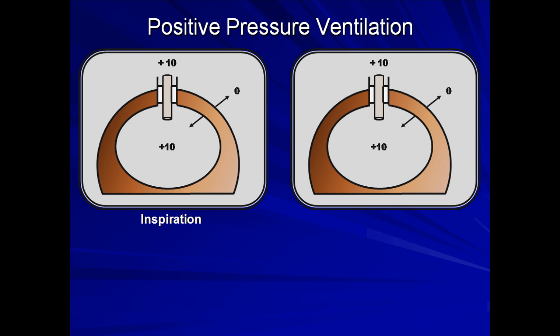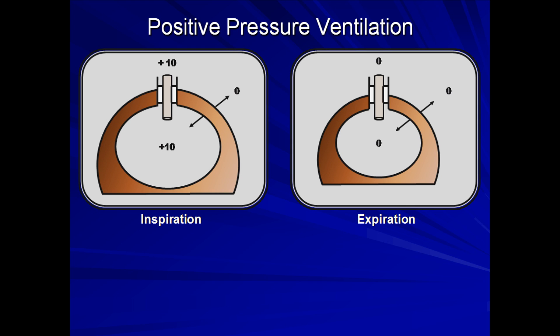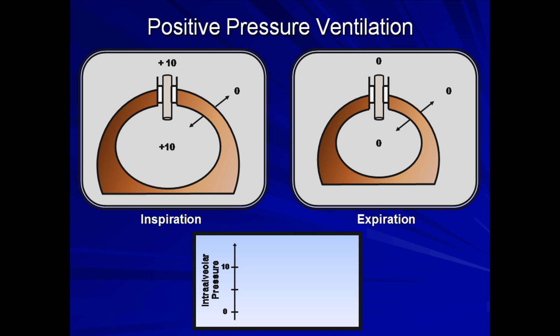Expiration is triggered by removal of the positive pressure being applied to the tube. Now the pressure gradient drives gas out of the lungs. As equilibrium is reached and the intra-alveolar pressure reaches zero, the net force on the lung favors elastic recoil, leading to lung deflation. Let's take a look at a graph of intra-alveolar pressure as a function of time. The dashed gray line will be atmospheric pressure set at zero for reference, and the dashed red line will be the extrinsic pressure applied via the endotracheal tube. Application of a constant positive pressure at the beginning of inspiration results in the intra-alveolar pressure reaching equilibrium with it towards the end of inspiration. With release of that extrinsic pressure, the intra-alveolar pressure quickly drops back down to zero.